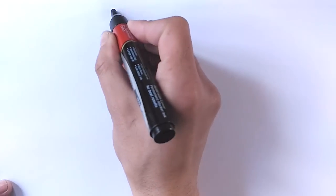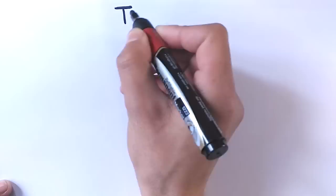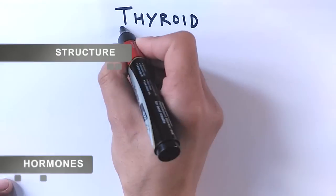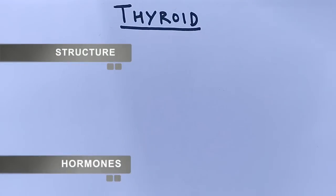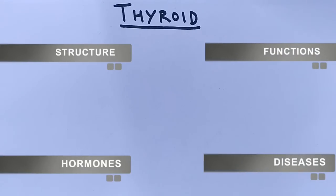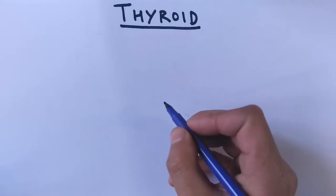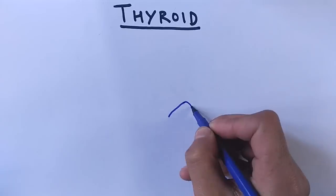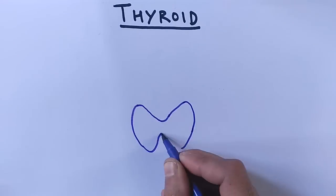Hello friends, in this tutorial we will be discussing the thyroid gland — its structure, the hormones it secretes, a brief overview of its functions, and finally the diseases caused by the abnormal functioning of the thyroid gland. So let's get started. First of all, we will look at the structure of the thyroid gland.